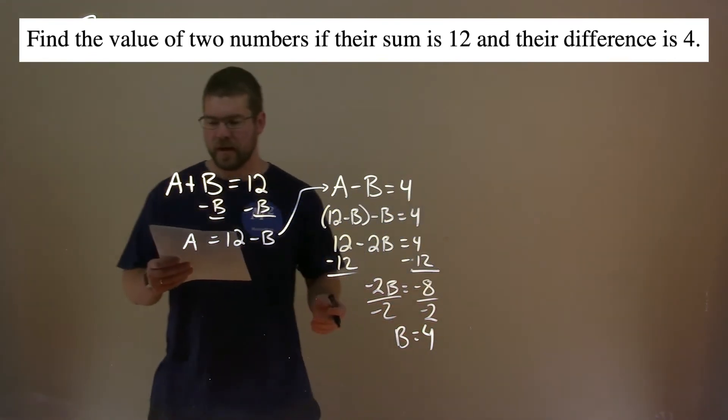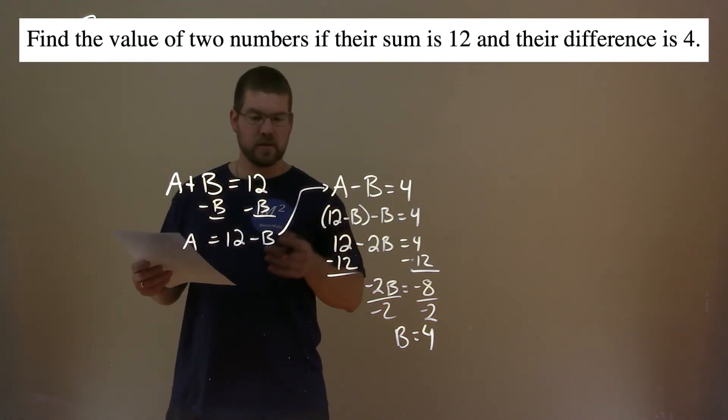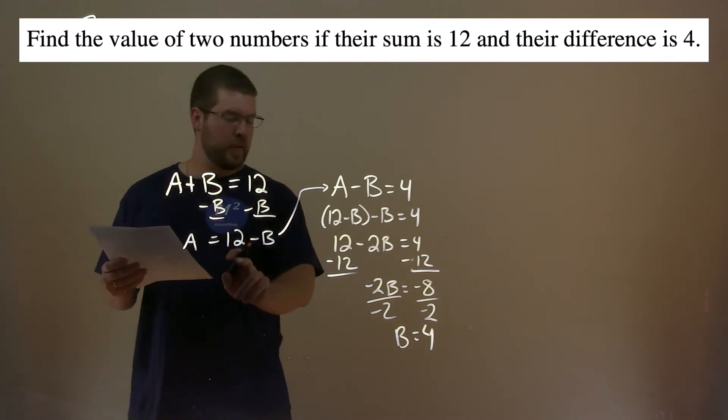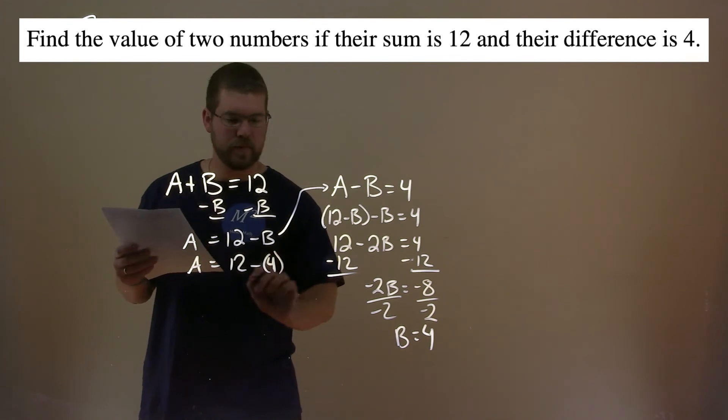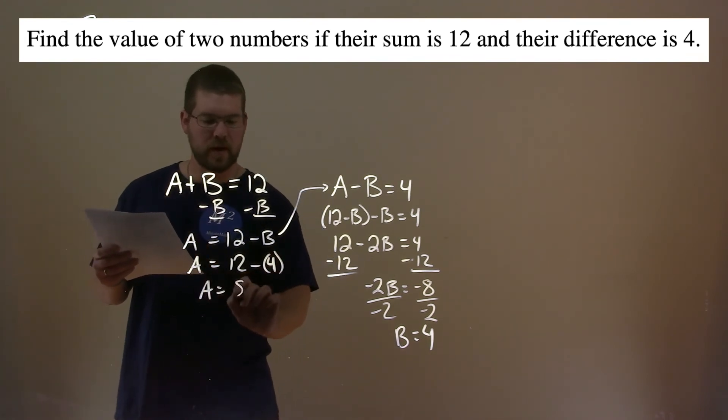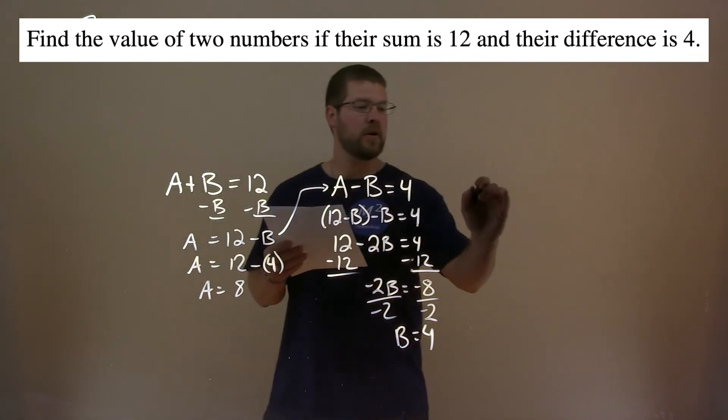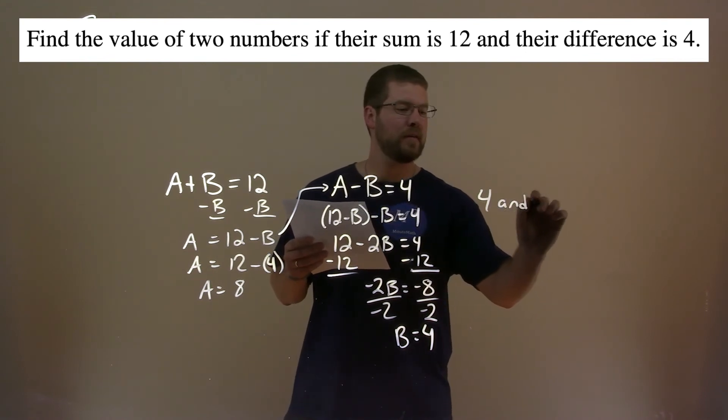So with that information, we need to plug it into one of our equations and solve for A. We can use the first one that was adapted. A equals 12 minus B, which is 4. 12 minus 4 is 8. So our two numbers are 4 and 8.